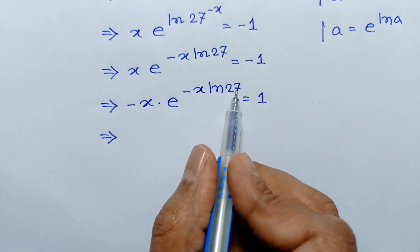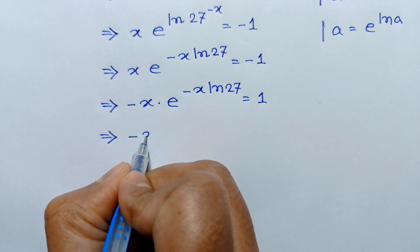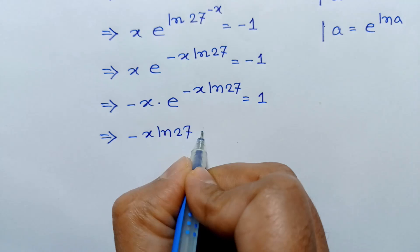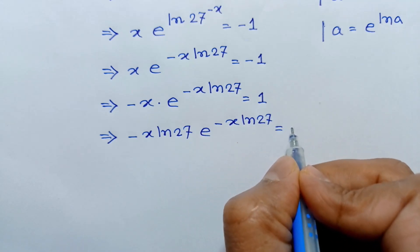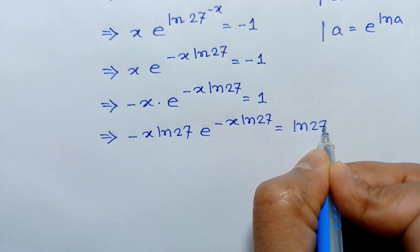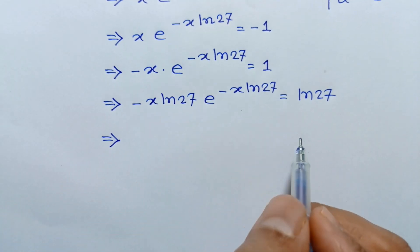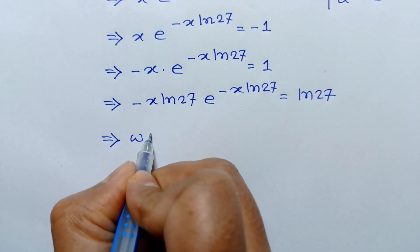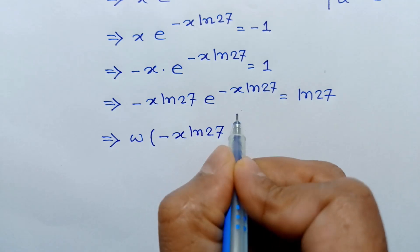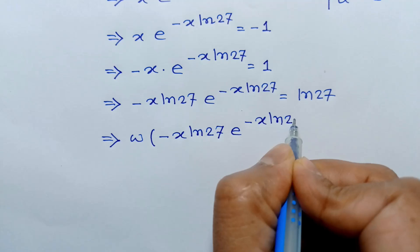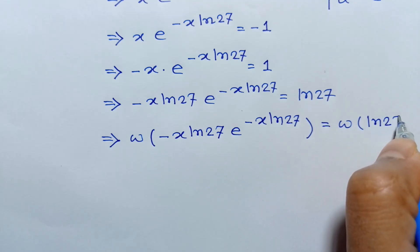So this becomes x times negative 1, giving negative x times ln of 27. Now taking the Lambert W function on both sides, we can write W of negative x ln of 27 times e to the power negative x ln of 27 is equal to W of negative x ln of 27.